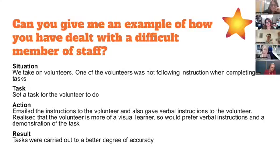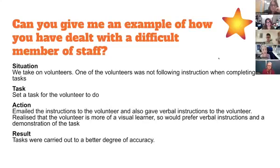For 'can you give me an example of how you've dealt with a difficult member of staff': we take on volunteers, and one volunteer was not following instructions when completing tasks. So I set a task for him — I gave him the instructions in two ways: I emailed them and also gave him verbal instructions. I realised he's more of a visual learner and liked demonstration. I carried on doing this and tasks get carried out to a better degree of accuracy.